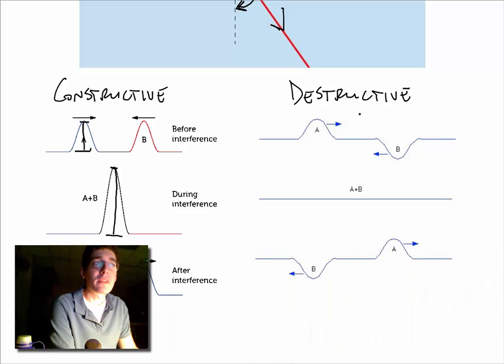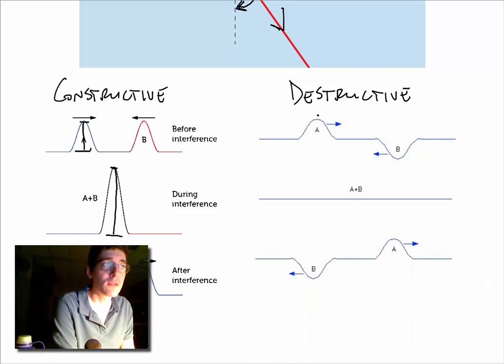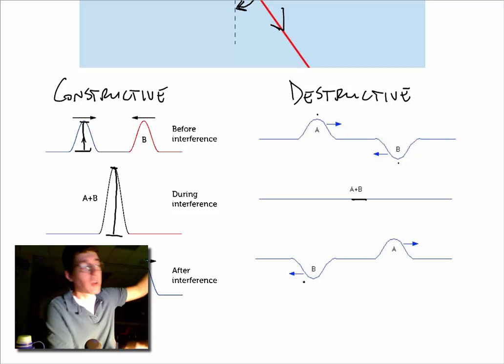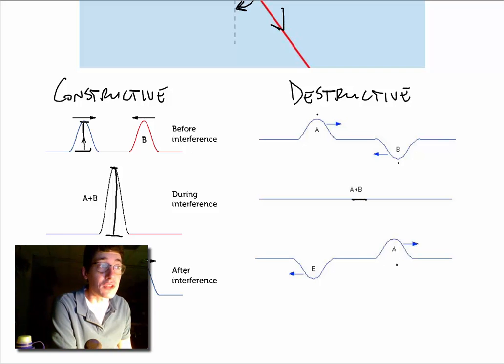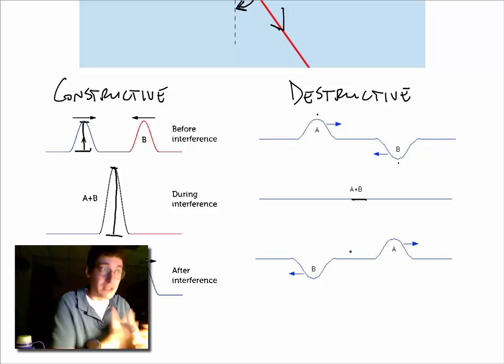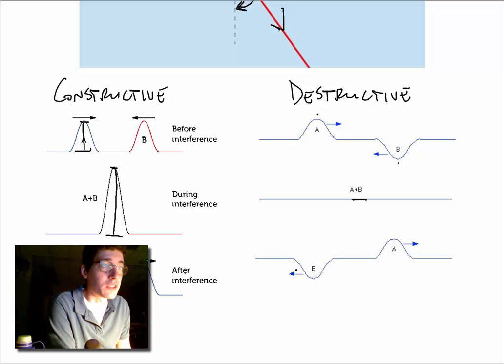Destructive interference is the opposite. So here I've got the crest of a wave, and I've got the trough of a wave. And when they meet, they cancel each other out. High meets low, and you meet in the middle, and you go back to rest. Now remember, the matter is not transferred. The energy is just passing by. And so the waves continue on their merry way once they pass each other.